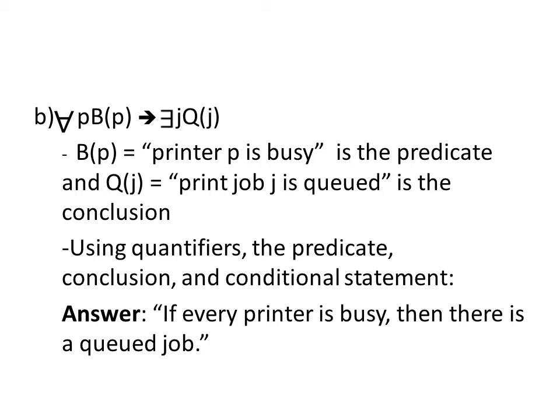Here we have another example: for all P, B(P) implies there exists some J such that Q(J). B(P) means printer P is busy, and that is the predicate. Q(J), meaning print job J is queued, is the conclusion of the implication. Using our quantifiers, the predicate, the conclusion, and the conditional statement, we can translate this as: if every printer is busy, then there is a queued job.